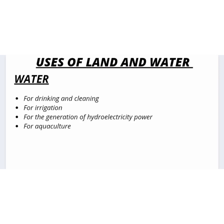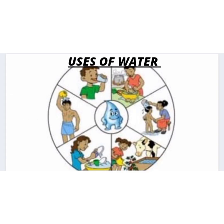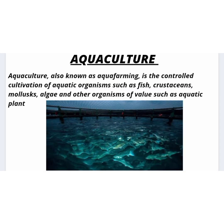Water is very essential for our life. We use it for drinking and cleaning, for irrigation, for the generation of hydroelectric power, and for aquaculture. Aquaculture is the rearing of aquatic animals or the cultivation of aquatic plants for food. Examples include fish farming, oyster farming, mariculture, and algae culture — that is seaweed farming.